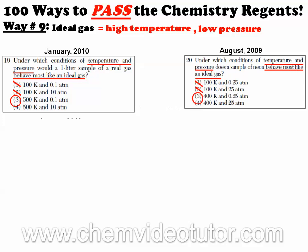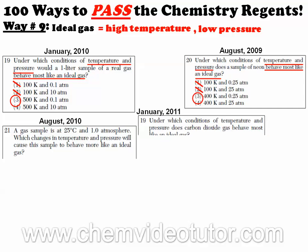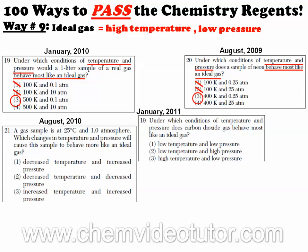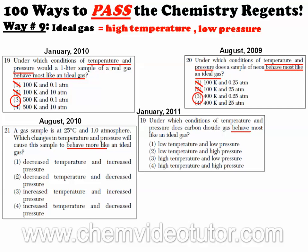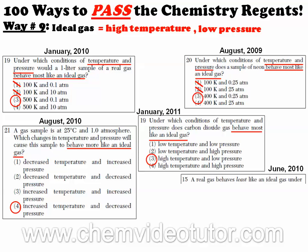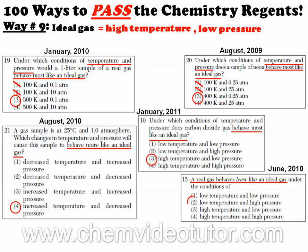Sometimes this same exact question can be asked using words in the choices as opposed to numbers, but that isn't going to change the answers. What will change the answer is if they ask about a real gas, which is nothing more than the opposite conditions of an ideal gas.